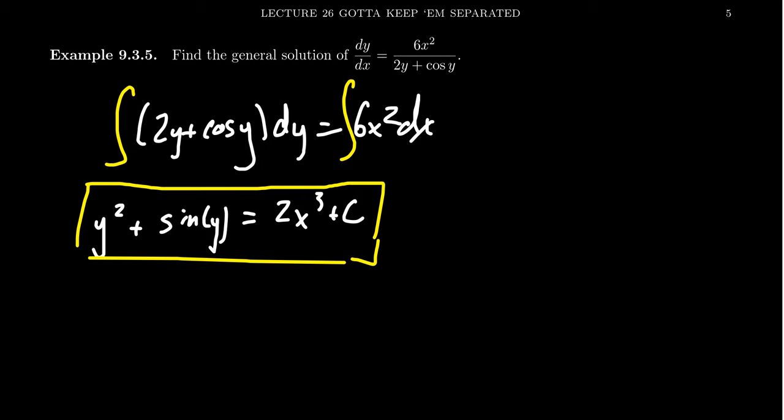And so in these two examples, we've seen that the solution actually could be left in implicit form. Or like in this example, we really can't get an explicit solution. We have to be content with this implicit solution right here.